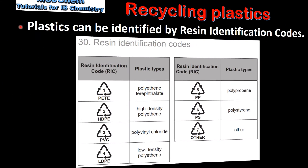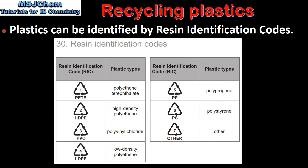Different plastics can be identified by resin identification codes. A table of resin identification codes can be found in the data booklet. For example, here we can see the resin identification code for high density polyethene, and here we have the resin identification code for polyvinyl chloride, or PVC.